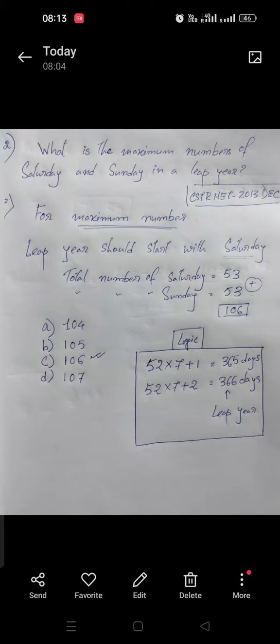So the sum will be 106, so the right answer will be option C. The maximum number of Saturday and Sunday in a leap year will be 106.